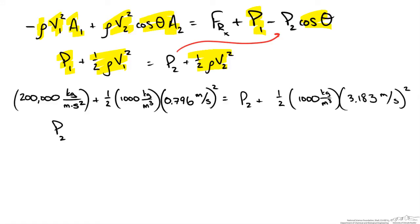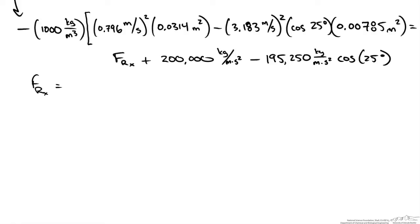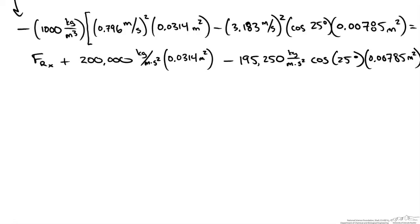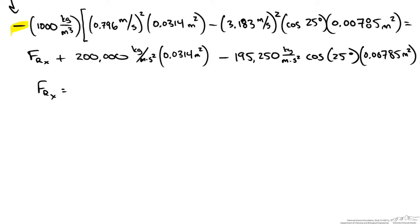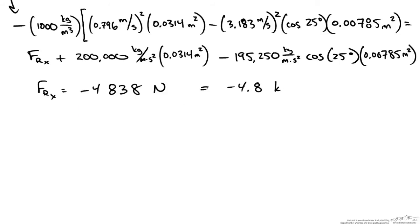Solving for the pressure at point 2 gives 195,250 Pa. Plugging p2 into the x-direction equation initially gives the wrong answer because pressure is not a force — we must multiply by the appropriate area, since pressure times area gives force. Rewriting the equation with the correct force terms and including the negative sign gives a resultant force in the x direction of negative 4,838 N, which is the same as negative 4.8 kN. This is primarily due to the pressures at points 1 and 2.